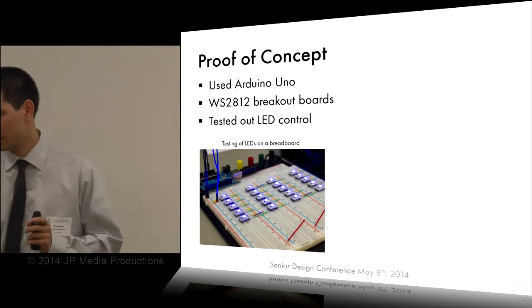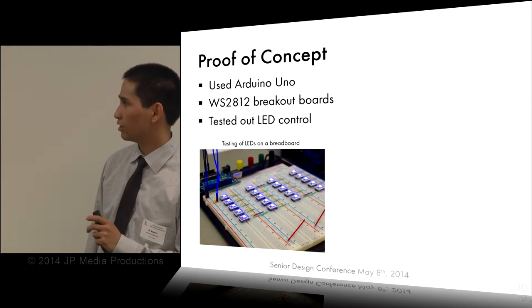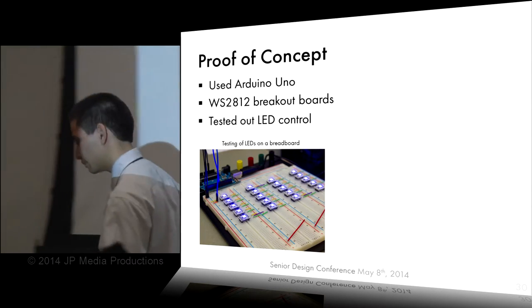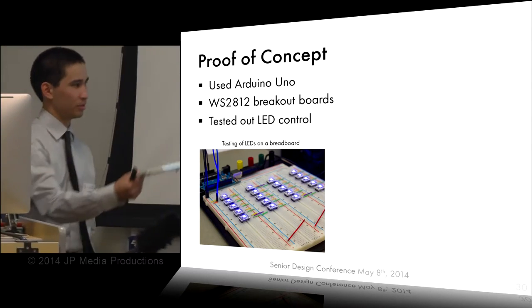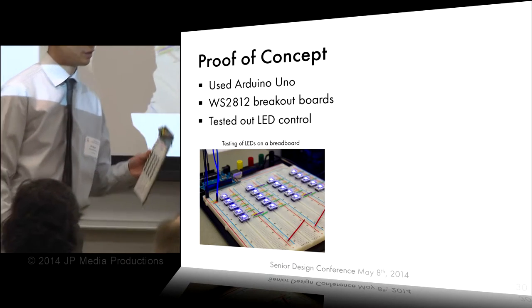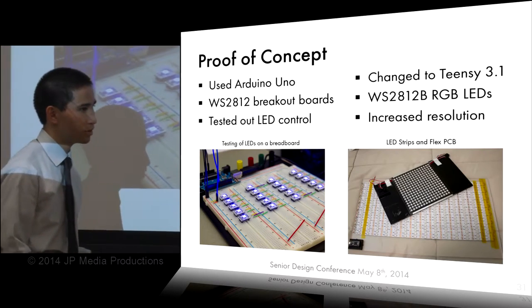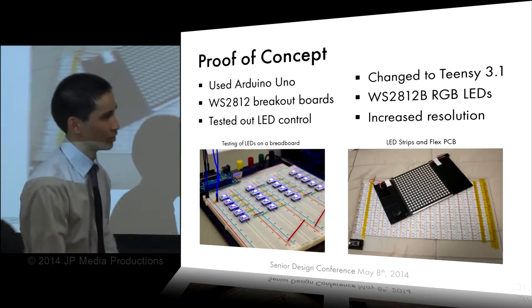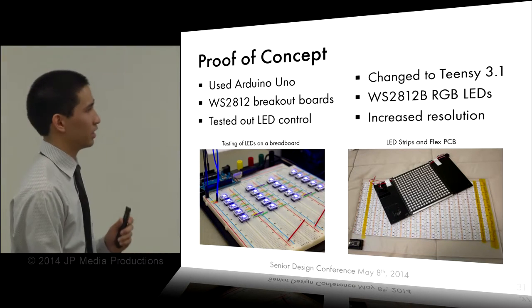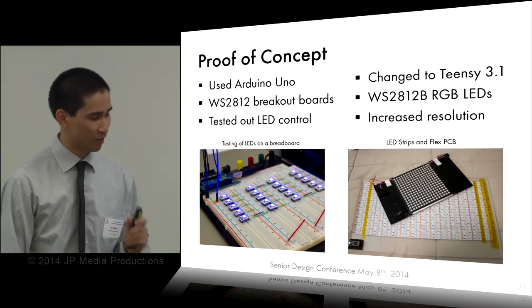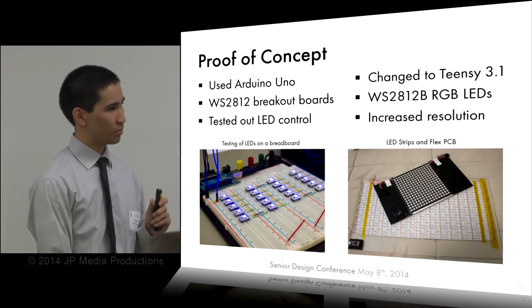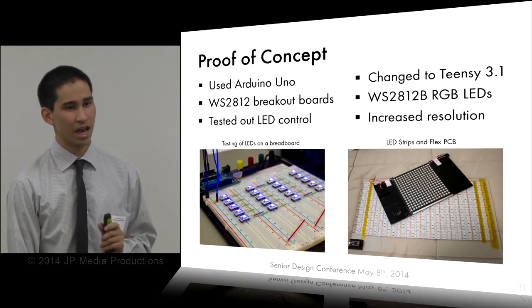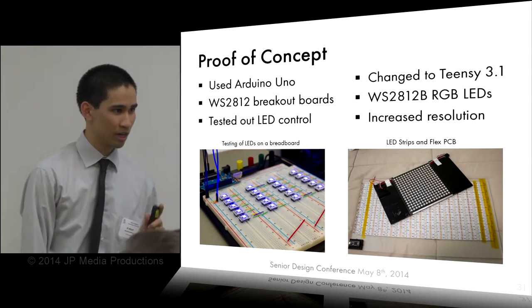This is our proof of concept — we combined our knowledge of how to control and power the LEDs and put everything on a breadboard to test whether we could even control the LEDs. From there we moved to a smaller scale flex PCB board and switched to a different type of LED: the WS2812B instead of the WS2812, because it prevents reverse polarity, offers higher brightness, and has a simpler pin readout — four pins versus six. That also makes it a lot easier to route the PCB. We also increased the resolution, which required switching to the Teensy because the Uno didn't have enough memory.